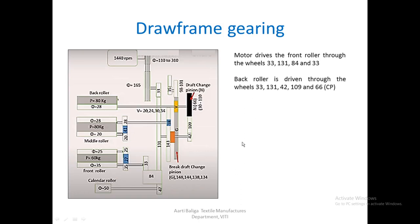The back roller is driven through these wheels: 33, 131, 42, 109, and 66, which is the CP. So the route is: motor pulley 33, then 131, and on this particular shaft there is a 42 wheel which drives the carrier 109, and 66 which drives the back roller.